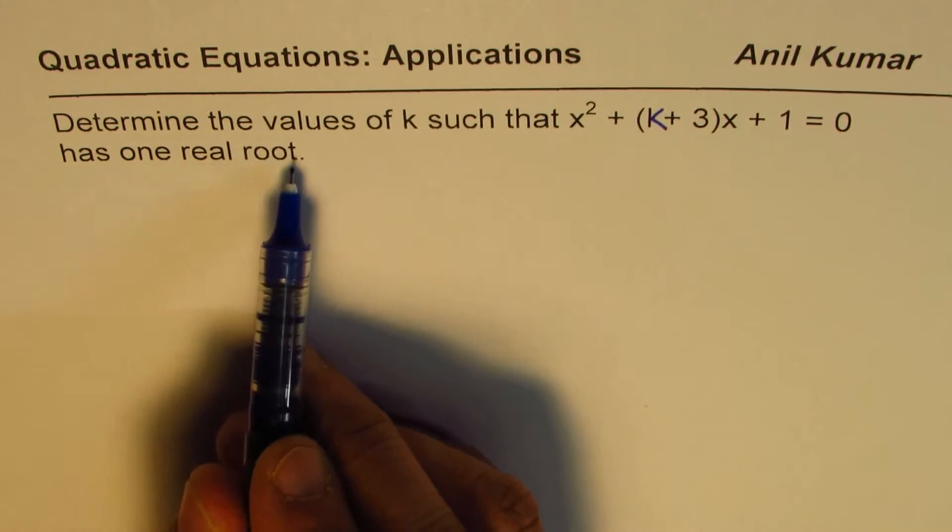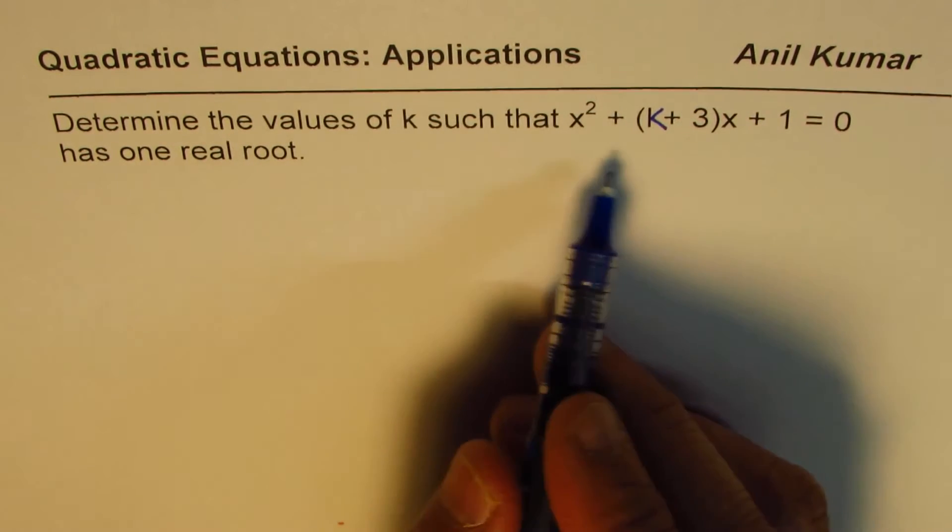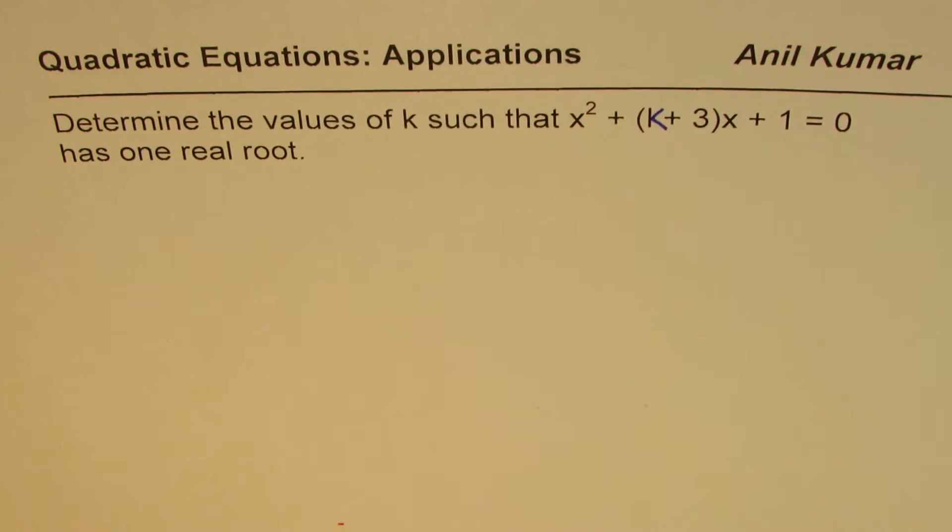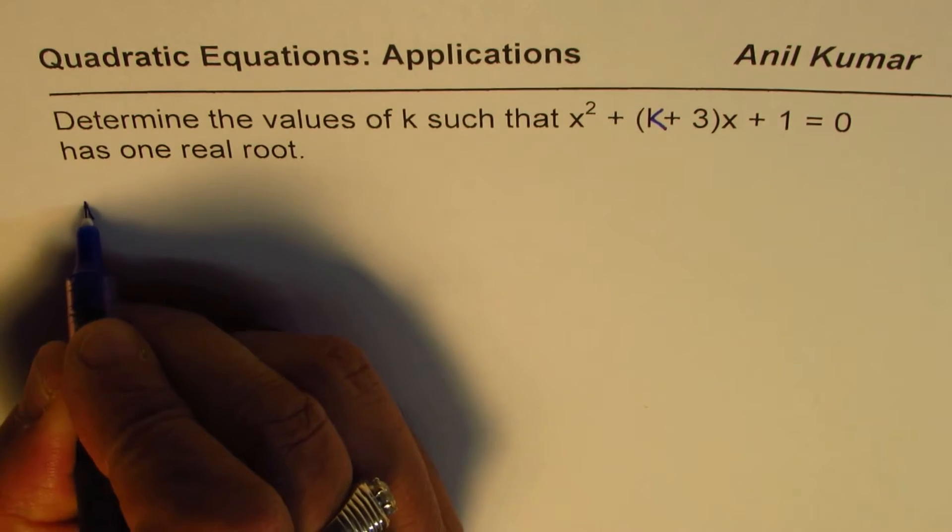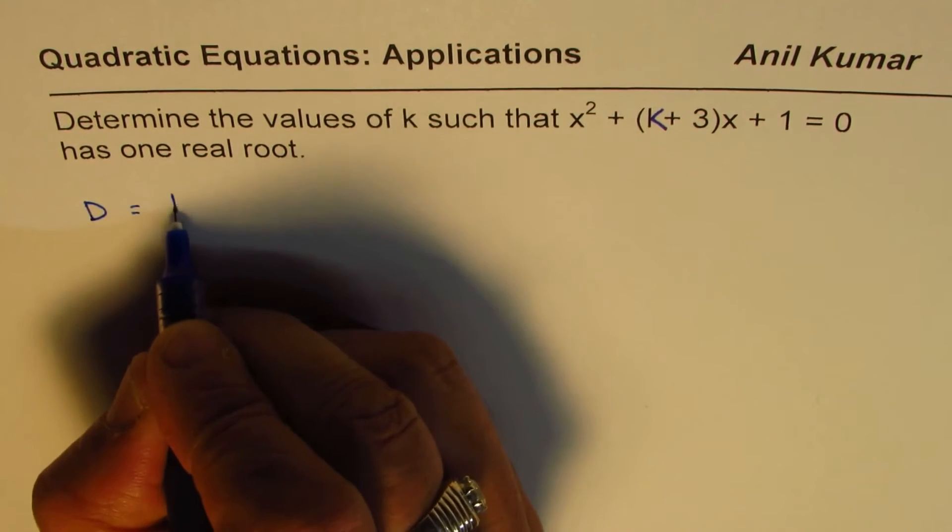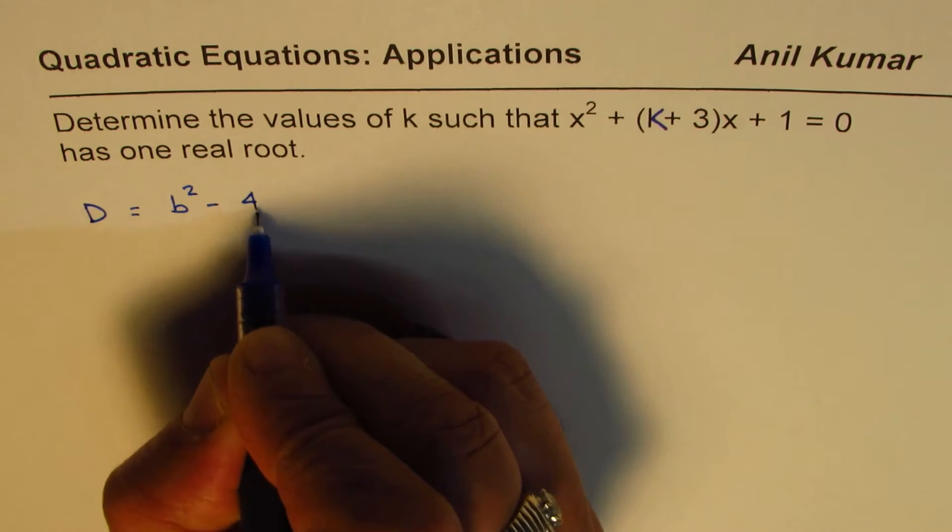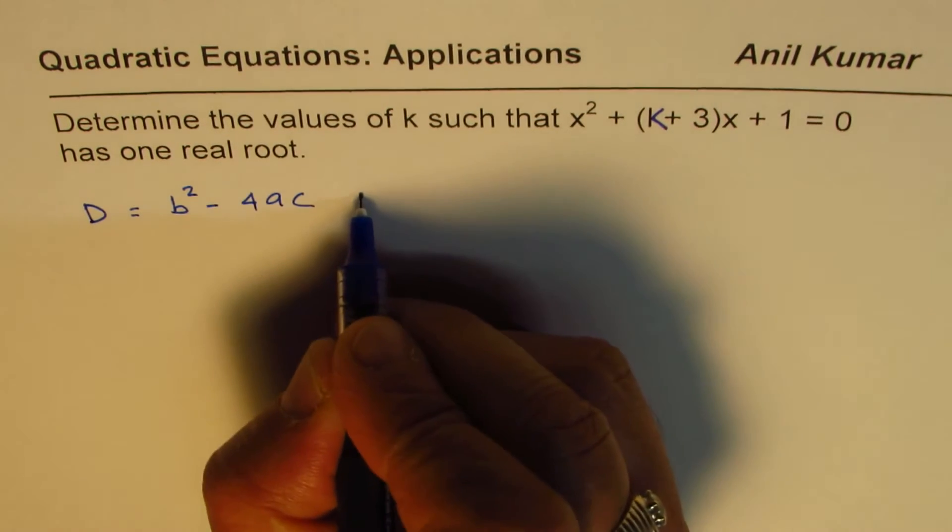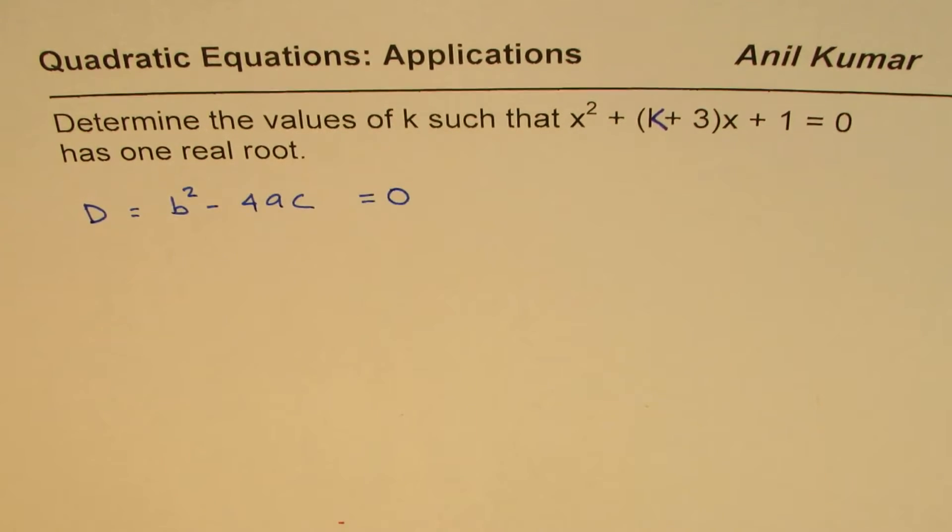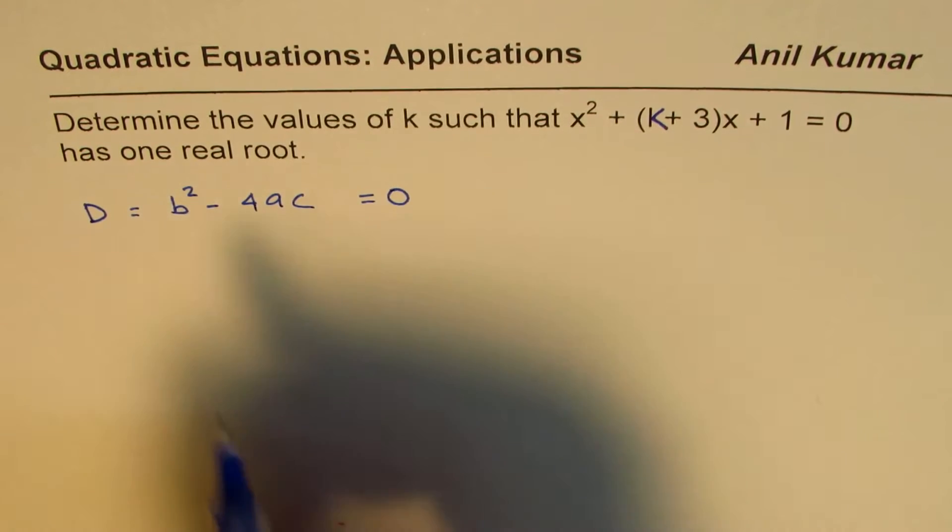Now if a quadratic equation has one real root, it means that the discriminant, which is b² - 4ac, should be equal to 0. That is what it means.